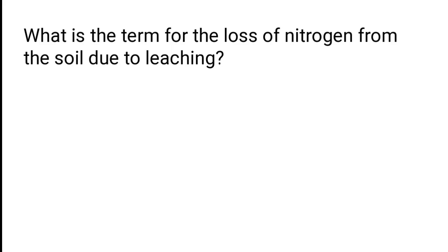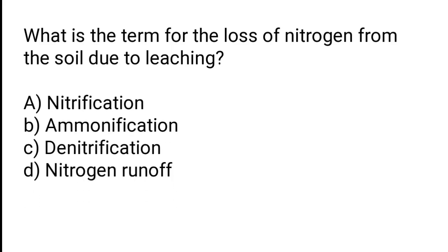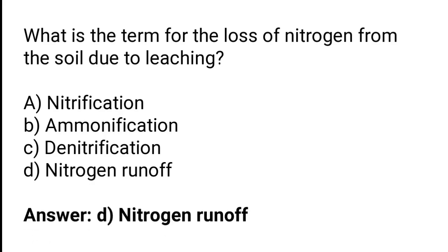What is the term for the loss of nitrogen from the soil due to leaching? The options are nitrification, ammonification, denitrification, or nitrogen runoff. The correct answer is option D — nitrogen runoff is the term for the loss of nitrogen from the soil due to leaching.